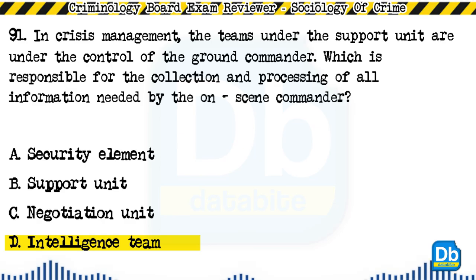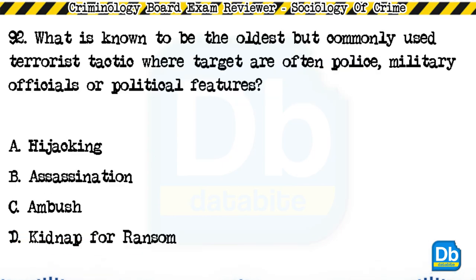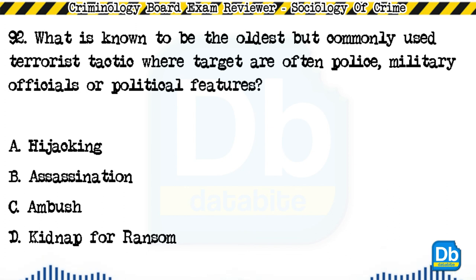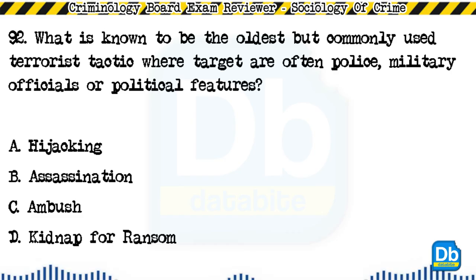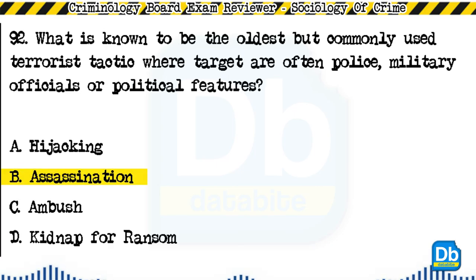Question 92: What is known to be the oldest but most commonly used terrorist tactic, where targets are often police, military officials, or political figures? a) hijacking, b) assassination, c) ambush, d) kidnap for ransom. The answer is B, assassination.